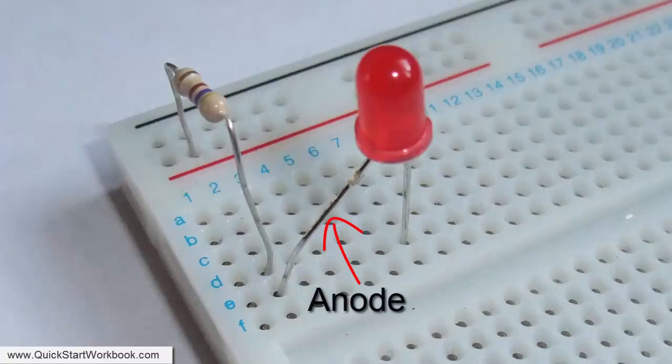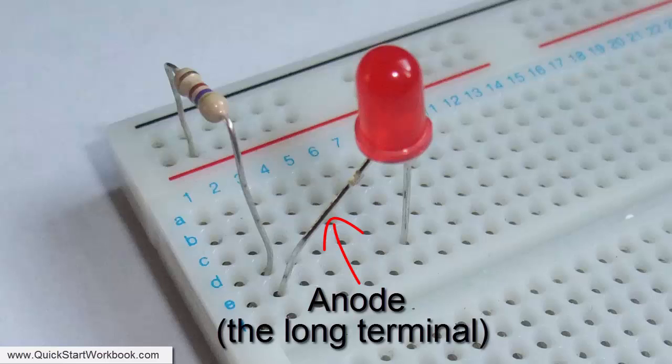Then we can add the LED. Here again I've labelled the anode this time which is the long terminal and also the cathode.